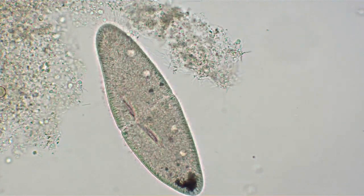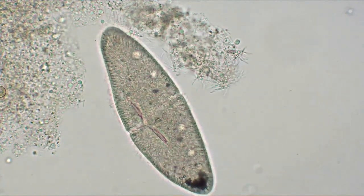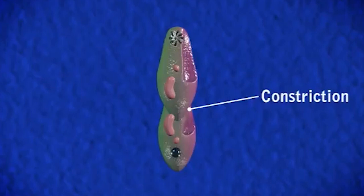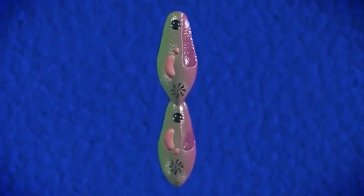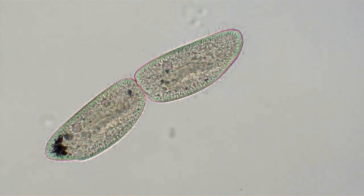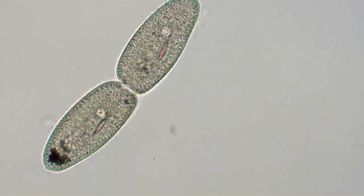The undulating membrane remains with the old cytopharynx while a new one arises in connection with the new cytopharynx. A new contractile vacuole arises near the anterior end of the body, another just back of the middle line. A constriction appears near the middle of the longitudinal diameter of the body; this cleavage furrow becomes deeper and deeper until only a slender thread of protoplasm holds the two halves of the body together. This connection is finally severed and the two daughter paramecia are freed from each other. Each contains both macro and micronuclei, two contractile vacuoles, and a cytosome with cytopharynx.